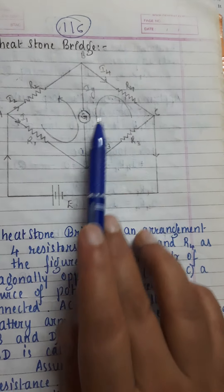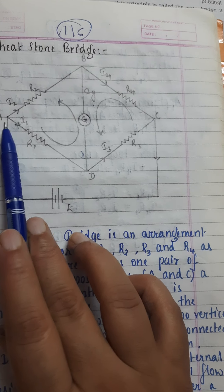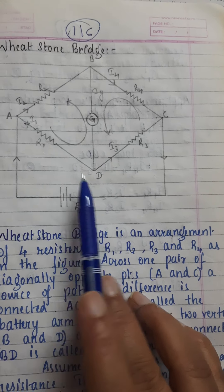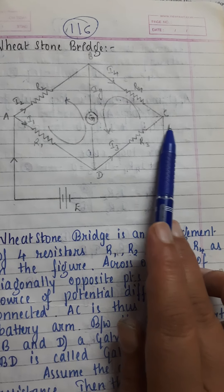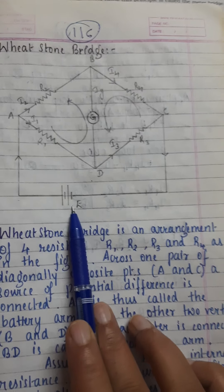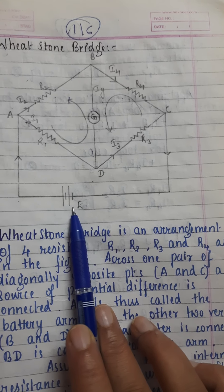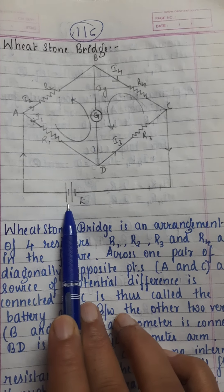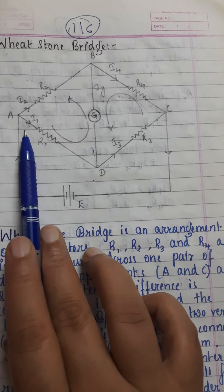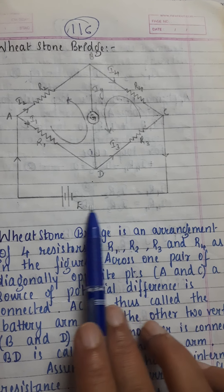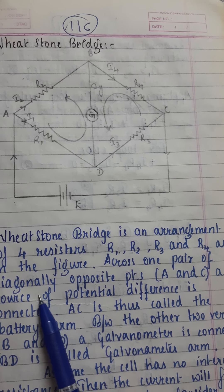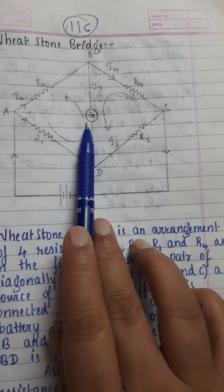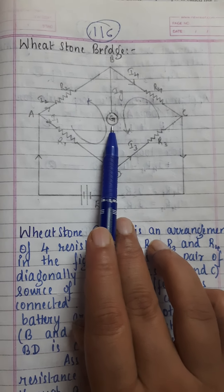The resistors are connected around points A, B, C, and D. Source voltage (battery) is applied across points A and C, so the AC arm is called the battery arm.